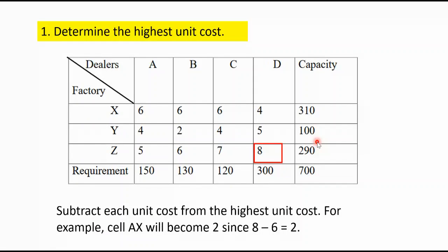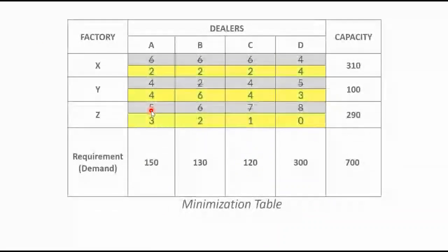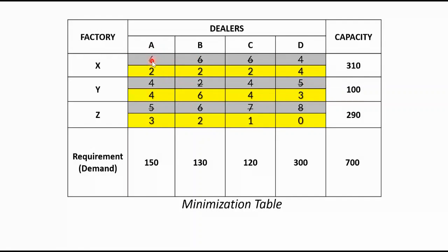What we are going to do is subtract each unit cost from the highest unit cost of 8. For example, in cell X-A, this becomes 2 since 8 minus 6 equals 2. So: 8 minus 6 is 2, 8 minus 6 is 2, 8 minus 4 is 4, 8 minus 2 is 6, 8 minus 5 is 3, 8 minus 7 is 1, and 8 minus 8 is 0. The highlighted values are the new unit costs in the matrix. The demand and capacity values stay the same — only the unit costs change.